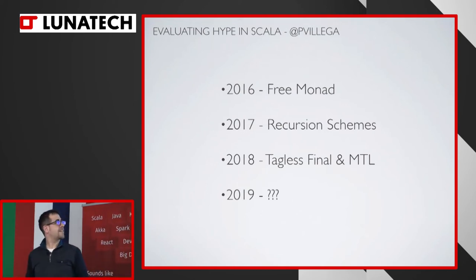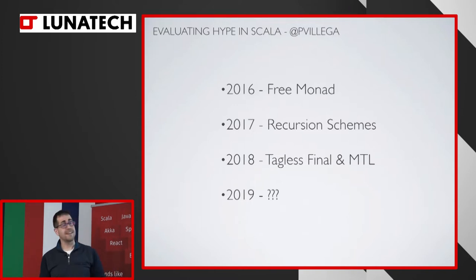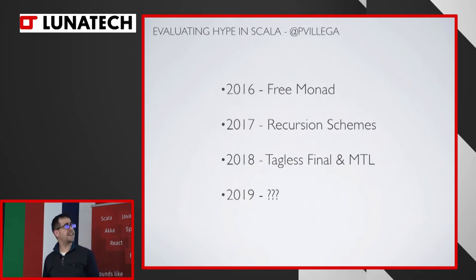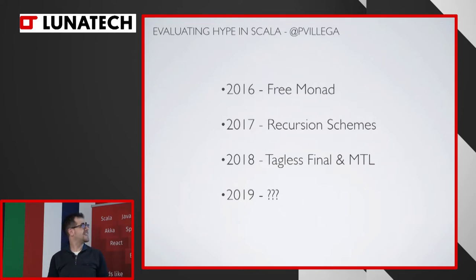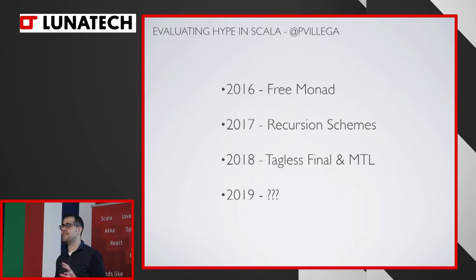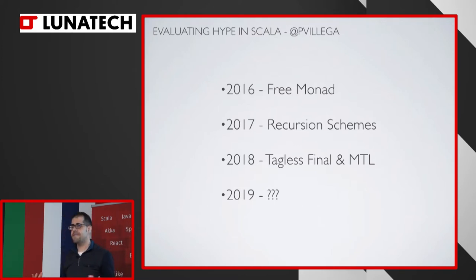Then I remembered that one of the first slides I had in my lightning talk was exactly this one. As you can see from the dates, in Scala, 2016 was the year of the Free Monad, 2017 was the year of the Recursion Schemes, 2018 we moved to Tagless Final and MTL, and 2019 — it's ZIO year, the year of the rotating environments. That kind of highlights something pretty common to developers: we really, really love our toys. Every year we need some new concept.